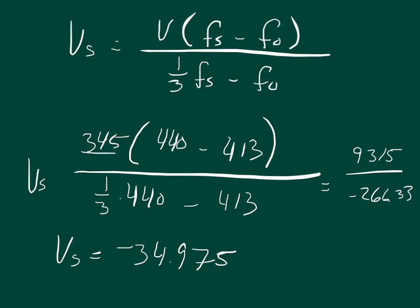The negative sign just indicates the car is moving away from the observer. When the problem asks for the speed of the car, we take the absolute value, so the speed of the car is 34.975 meters per second.